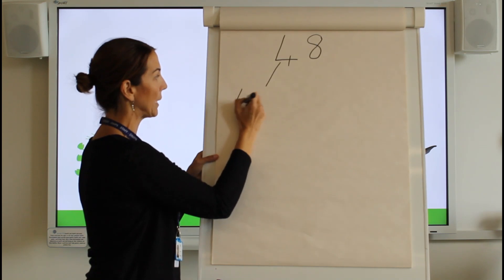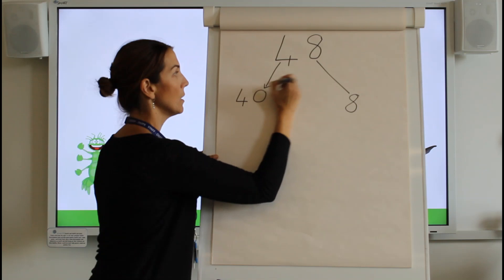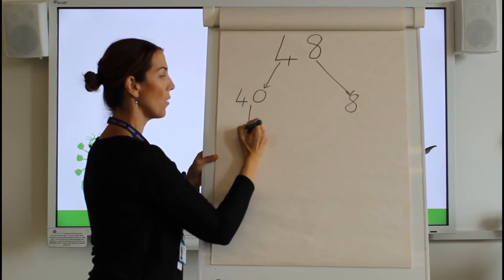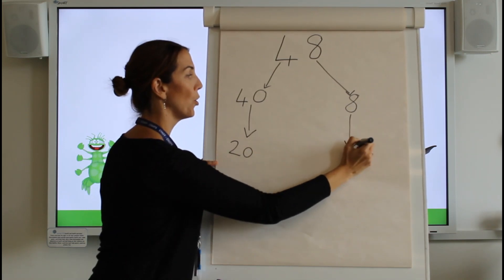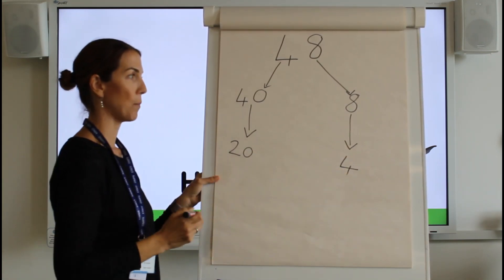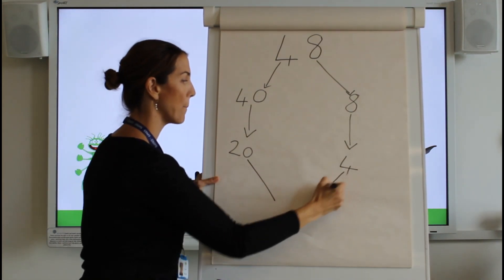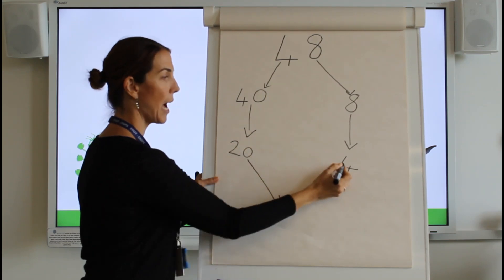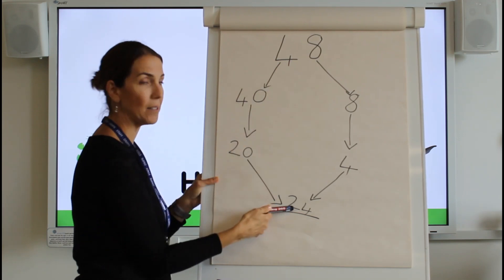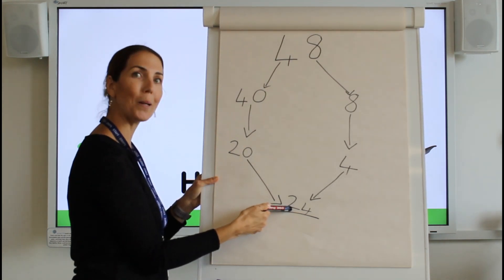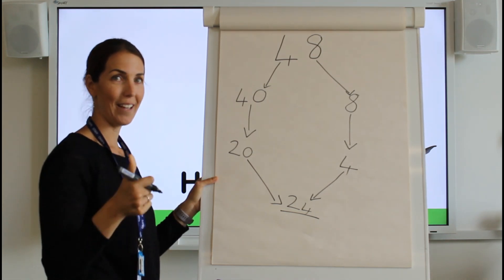Step one: partition. I get my tens, I get my ones. Step two: half my tens. Half my ones. Step three. And then the very last step, step four, is put them back together again. 20 and my four will give me 24. So, half of 48 is 24. Double 24 gives me 48 again. Is that what you have as well? Excellent job.